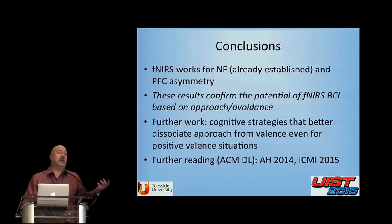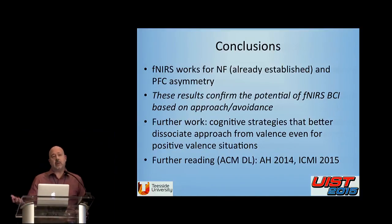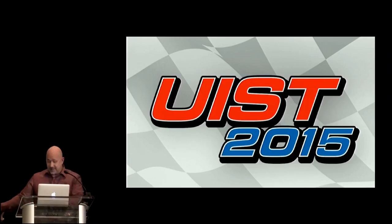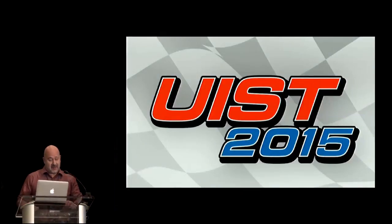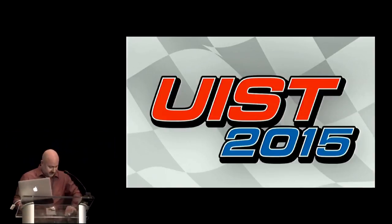The presenter explained they started with the application and as they got deeper into the technique, realized there were fundamental issues with prefrontal asymmetry — particularly the valence-approach ambiguity — which could only be resolved by anger. They moved to fNIRS because it was well-accepted for interfaces and effective for detecting prefrontal cortex activity.